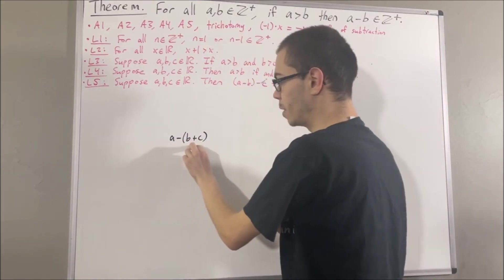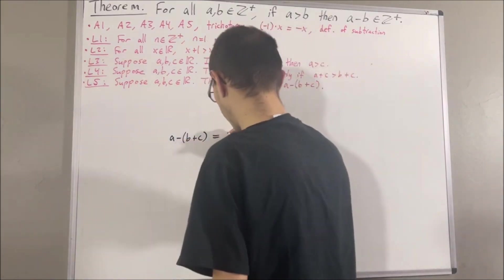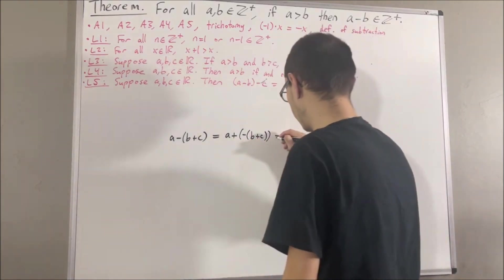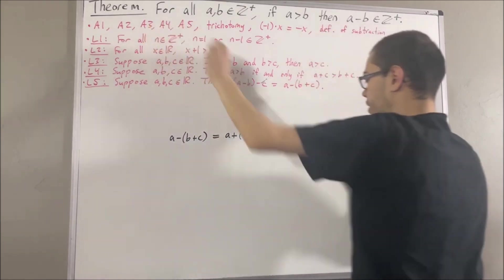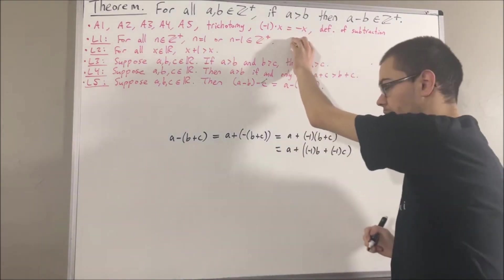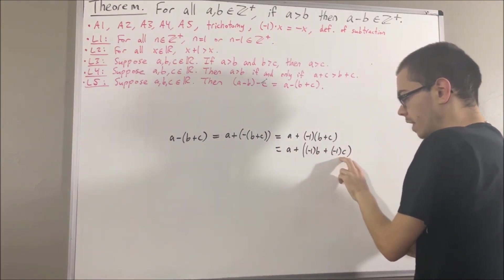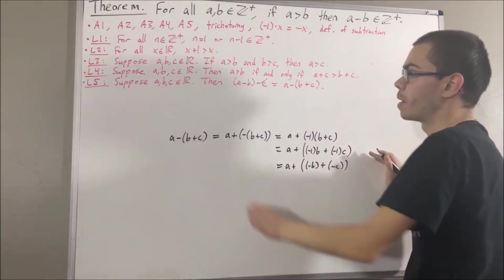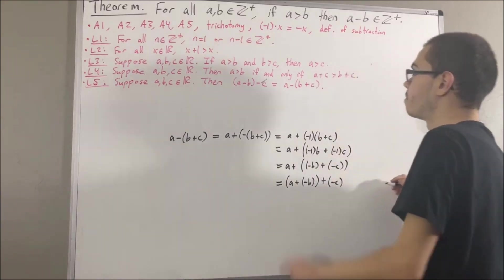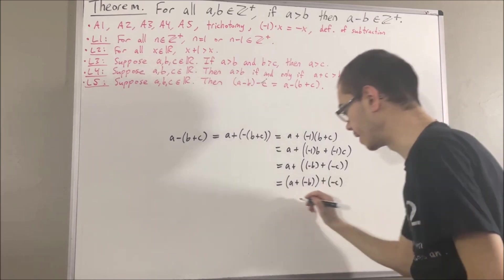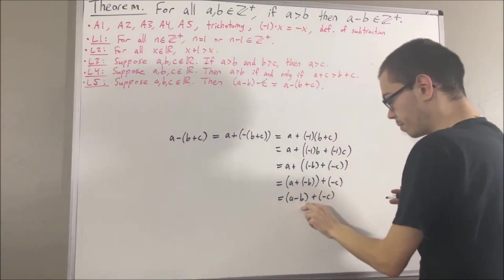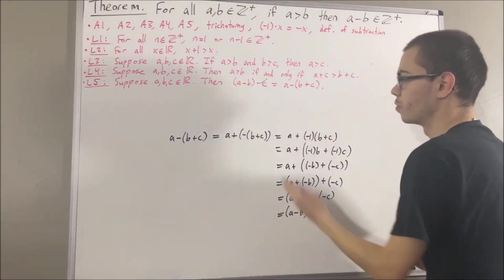First, by definition of subtraction, a minus (b plus c) is equal to a plus the negative of (b plus c). And then, by this result, we know that the negative of (b plus c) is equal to negative 1 times (b plus c). And then, by the distributive law, axiom 3, we can distribute negative 1 across this parentheses. And then, by this result again, negative 1 times b is equal to the negative of b, and negative 1 times c is equal to the negative of c. And then, by the associative law, axiom 2, we can move these parentheses around a plus the negative of b. And then, by definition of subtraction, a plus the negative of b is equal to a minus b. And then, by definition of subtraction again, a minus b plus the negative of c is equal to a minus b minus c. And so, through this chain of equalities, we have shown that these two are equal.